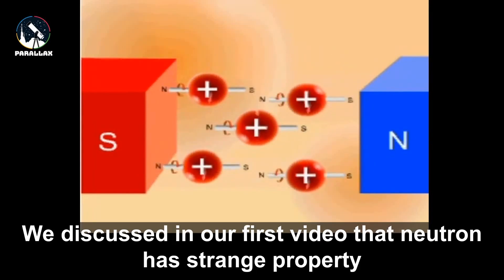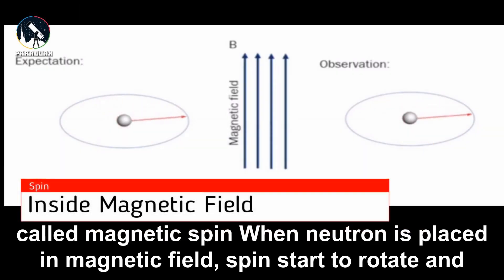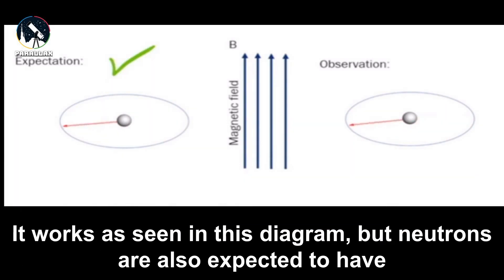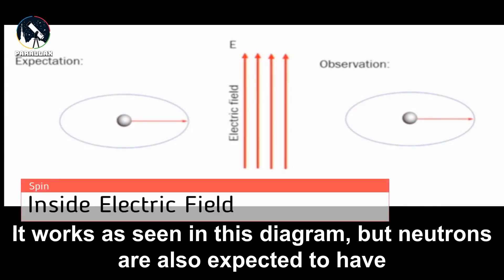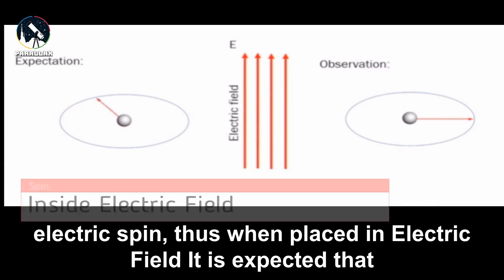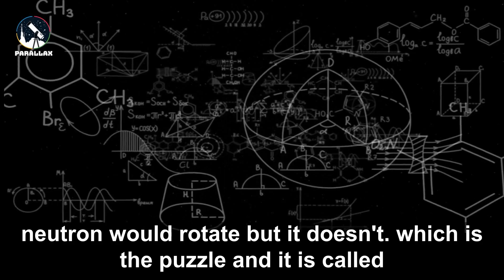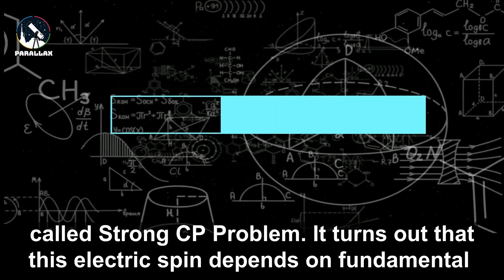We discussed in our first video that the neutron has a strange property called magnetic spin. When a neutron is placed in a magnetic field, the spin starts to rotate and it works, as seen in this diagram. But neutrons are also expected to have electric spin. Thus when placed in an electric field, it is expected that the neutron would rotate, but it doesn't. This puzzle is called the Strong CP Problem.